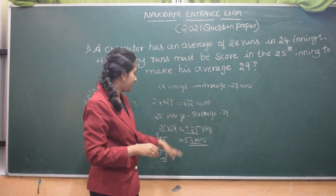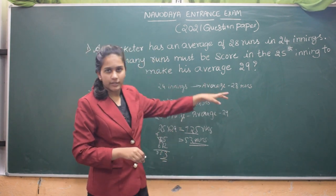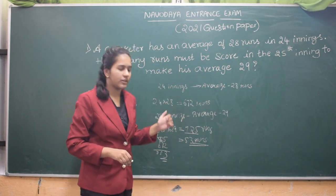So he should make 53 runs in the 25th inning so that the average becomes 29. So I hope you understood this question friends.